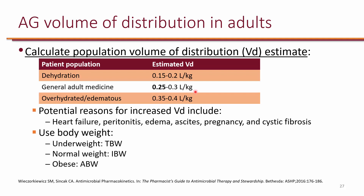If someone is dehydrated, this volume of distribution will be reduced. For the purpose of this class, we're going to use 0.15 liters per kilogram. On the other hand, if someone is over-hydrated, the volume of distribution will be increased, so we're going to use 0.35 liters per kilogram.